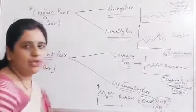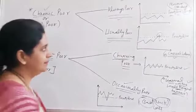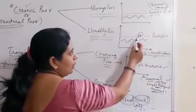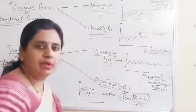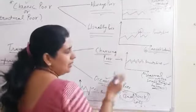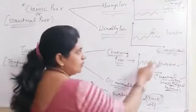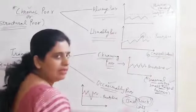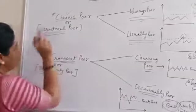The second category is usually poor. As the name suggests, usually they are poor. See the diagram — this is the poverty line and they fall below it. Usually they are below the poverty line, but due to some work they fall above it. Casual labour is the example of usually poor. They casually get work; when they get work they fall above the poverty line, otherwise they remain below it. These two are the categories of chronic poor, also called structural poor.